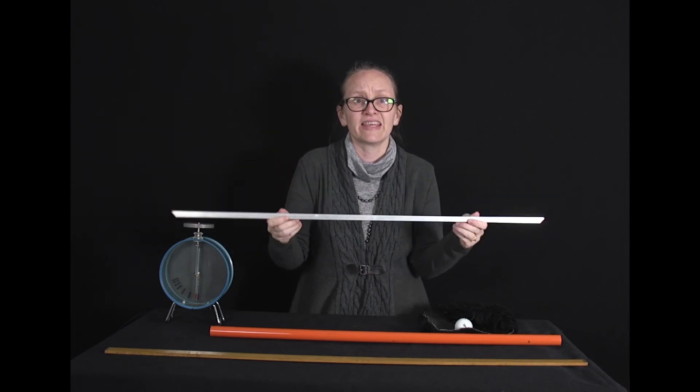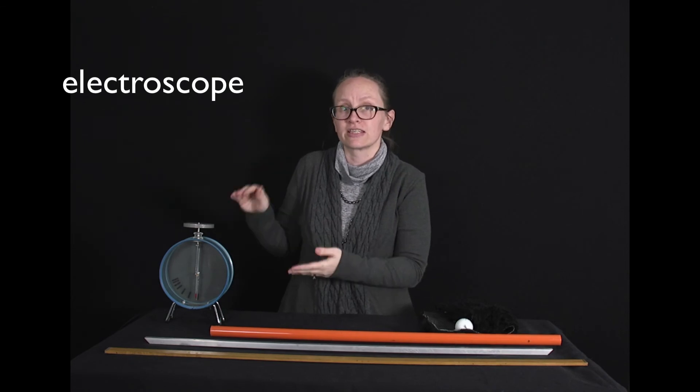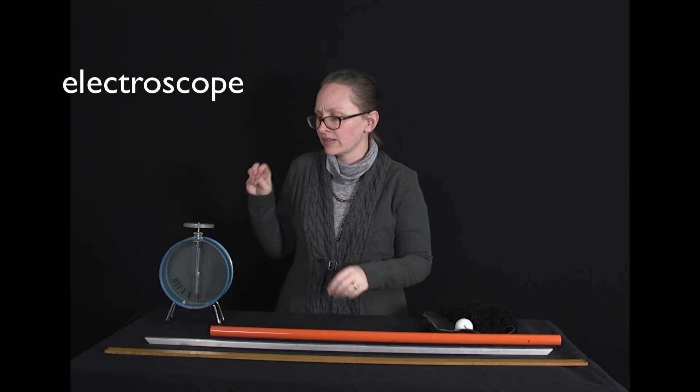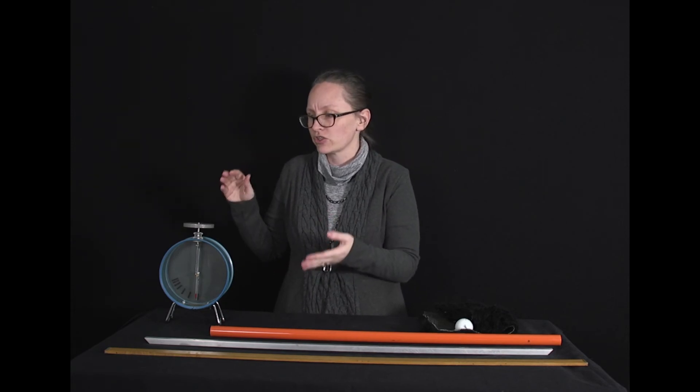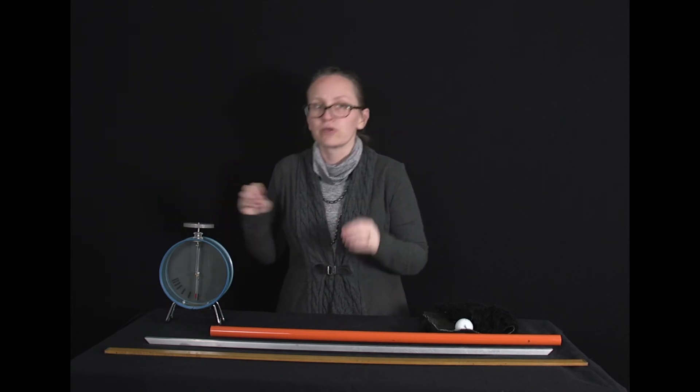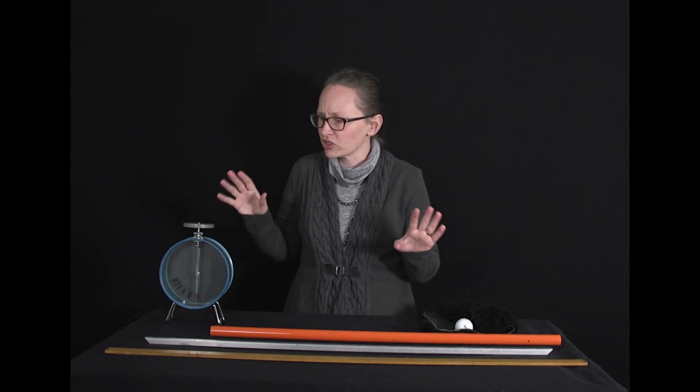Now if we can understand this, we can understand how an electroscope such as this one works. So an electroscope is a useful instrument for measuring the voltage on something. So we'll learn about voltage later, but it's related to how much charge we have.